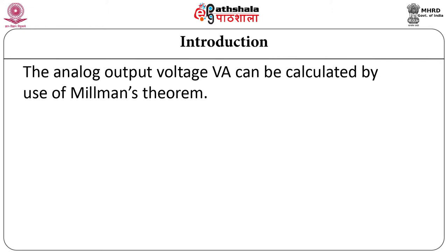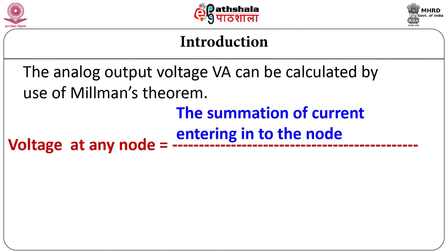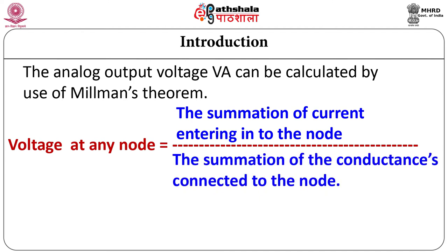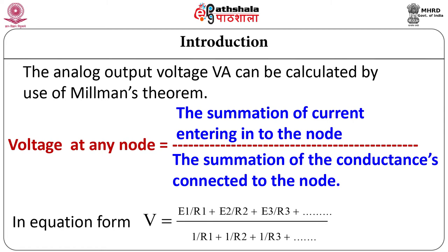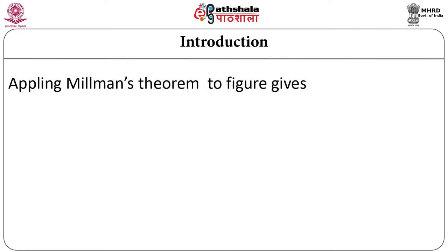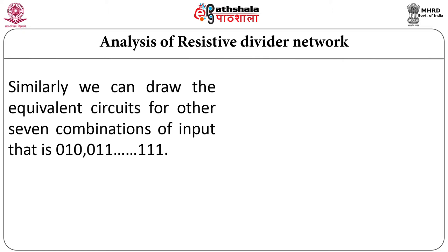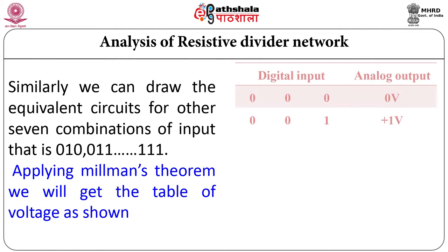According to Millman's theorem, the voltage at any node is the ratio of the summation of currents entering the node to the summation of conductances connected to the node. In equation form: VA = (E1/R1 + E2/R2 + E3/R3 + ...) / (1/R1 + 1/R2 + 1/R3 + ...). Applying this, the analog output voltage VA comes out to be +1 volt, which is the contribution of the LSB bit for a 3-bit DAC where logic 1 equals +7 volt.